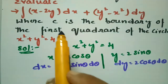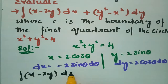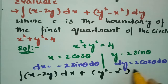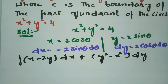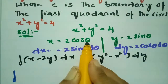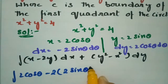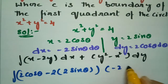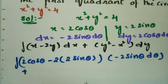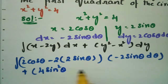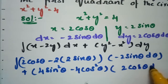Now using these four values I am going to evaluate the integral: (x minus 2y)dx plus (y squared minus x squared)dy, where θ ranges from 0 to π/2. After substitution, in place of x I write 2 cos θ, in place of y I write 2 sin θ, dx becomes minus 2 sin θ dθ, y squared is 4 sin² θ, x squared is 4 cos² θ, and dy is 2 cos θ dθ.